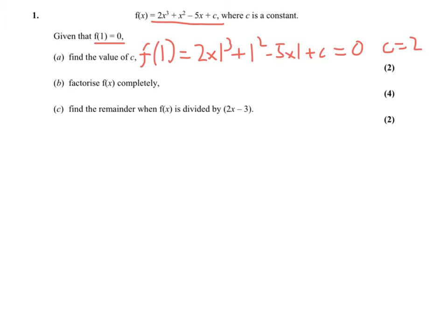Now to factorize completely, I know that x minus 1 is a factor, and I know that multiplied by something equals what we were given in the first place. So here we go, we've got minus 5x plus 2, which I found from part a. x times what makes 2x cubed? Well, that's got to be 2x squared. And minus 1 times what makes plus 2? So that has to be minus 2.